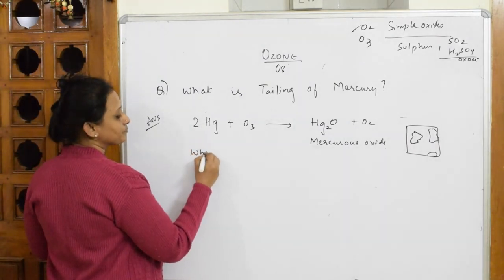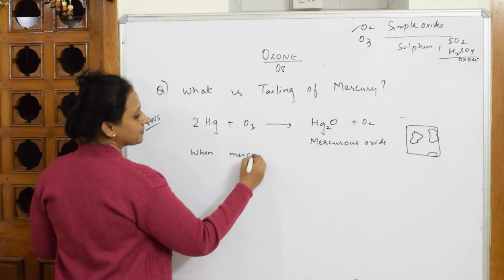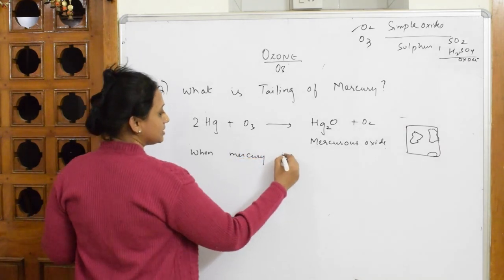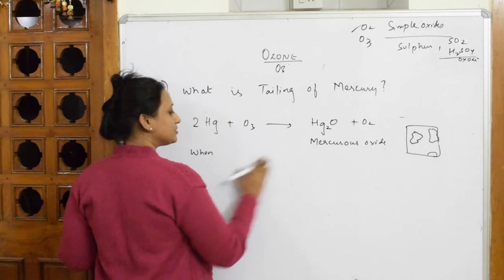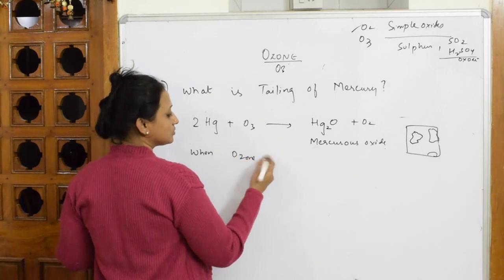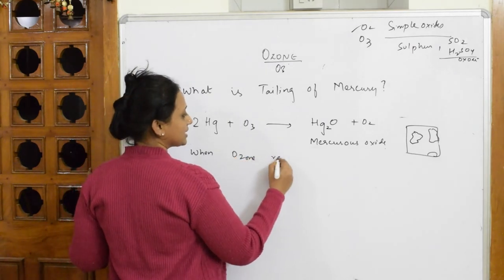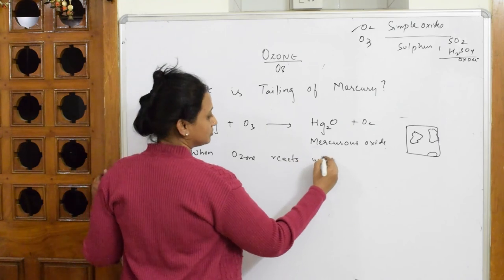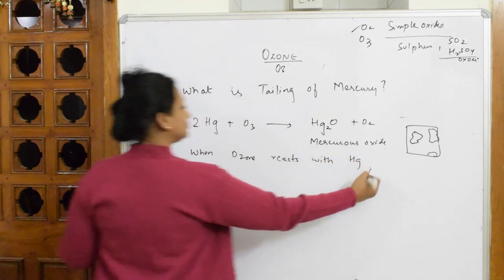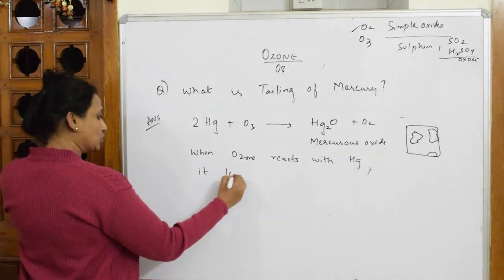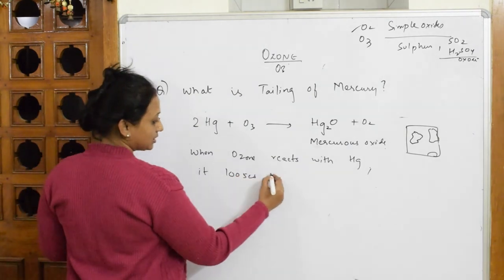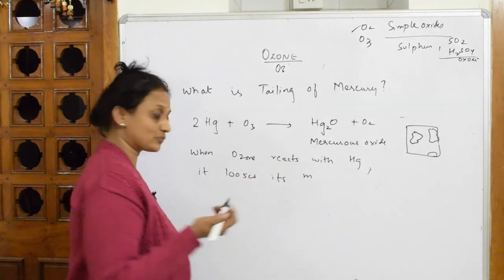When ozone reacts with mercury, it loses its meniscus. I already explained what is meniscus.